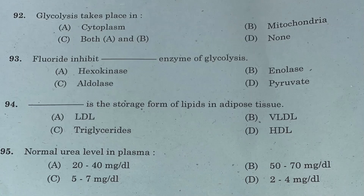Question 92: Glycolysis takes place in — Option A: cytoplasm. Option B: mitochondria. Option C: both A and B. Option D: none. Answer is Option A, cytoplasm.